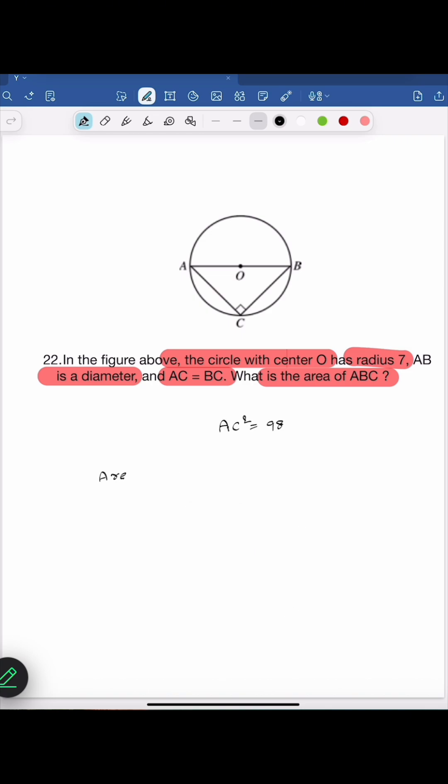Area of triangle formula is half times base times height. In this triangle, base is BC and height is AC. We already know BC and AC are equal. Half times AC square is the area of the triangle.